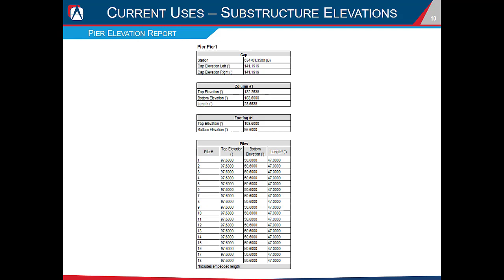Another substructure elevation report we run is the pier elevation report. This gives us left and right cap elevations, elevations at the top of column, top and bottom of footing elevations, as well as top and bottom of pile elevations.